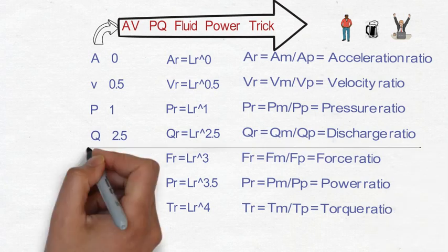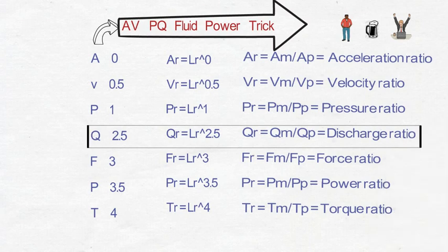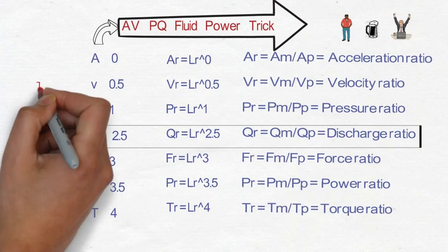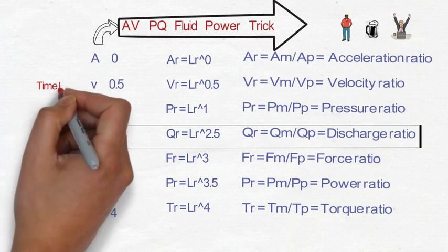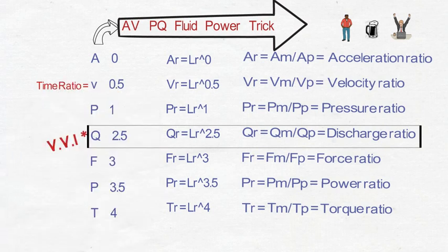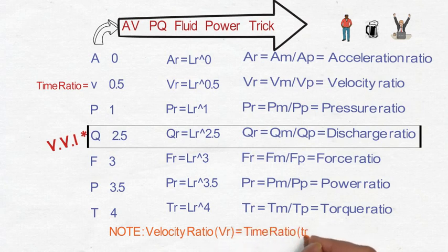Now out of these ratios, the discharge ratio is very much important. Most of the questions you will get from the discharge ratio only, if you are going to solve the GATE and IES questions. So discharge ratio is nothing but LR raised to the power 2.5. Another thing is known as time ratio. This is similar to the velocity ratio. So velocity ratio is equal to time ratio. That means this will be equal to LR raised to the power 0.5.